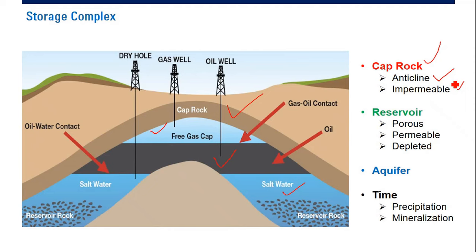CO2 will not go up — tidak akan lepas kembali ke atas — because we have cap rock. We need a reservoir; by reservoir, I mean we need a porous zone — yang berpori — and a permeable zone. It is good if it is depleted — tekanannya sudah rendah, oil and gas already depleted — so that we can store more CO2. If the pressure is still high — jika tekanannya masih tinggi — susah kita nginjek. So it is better if it is depleted.